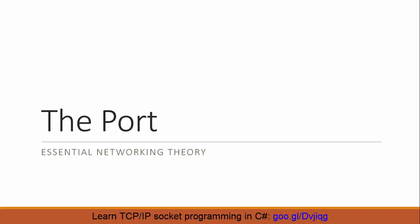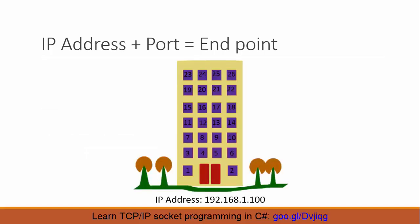To understand port numbers, we consider that our computer is an apartment building just like this one. This building can be reached by following a unique street address. If we are considering that this building is a computer or a smartphone, we are going to use an IP address.